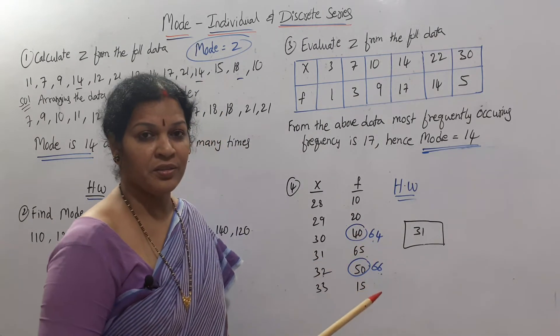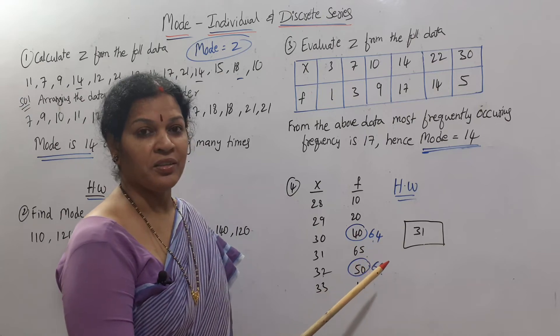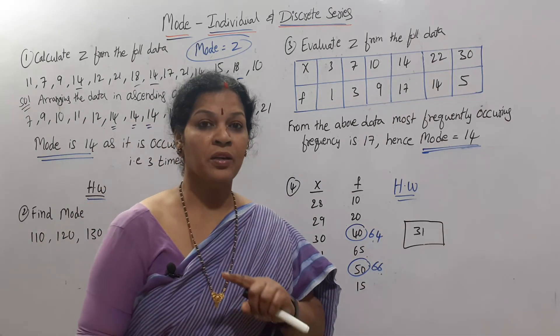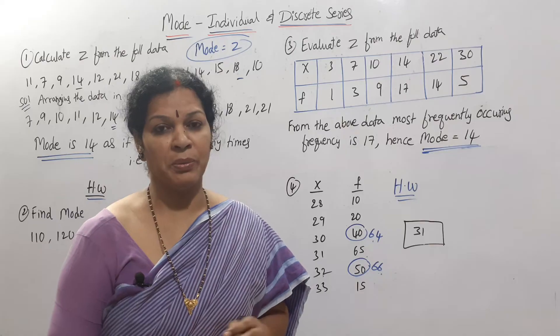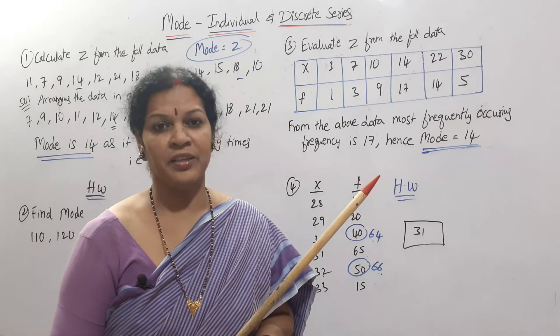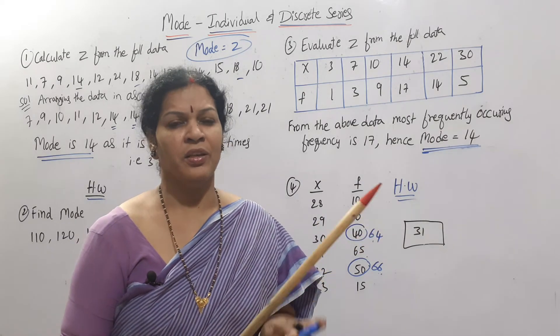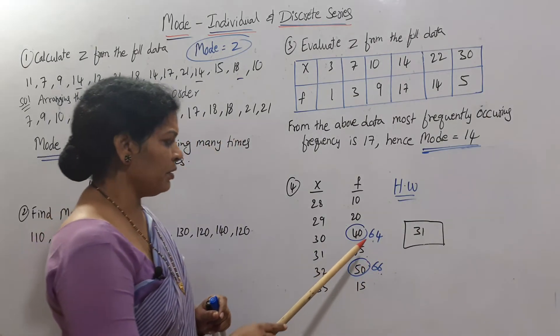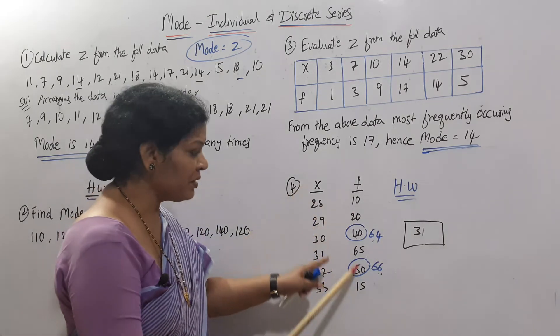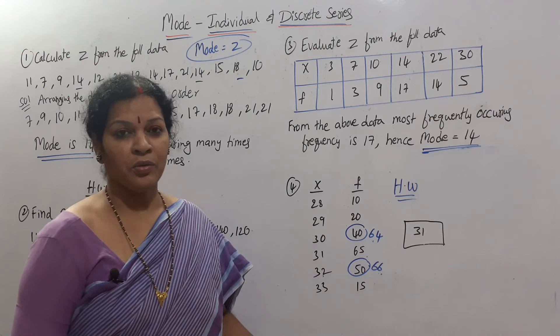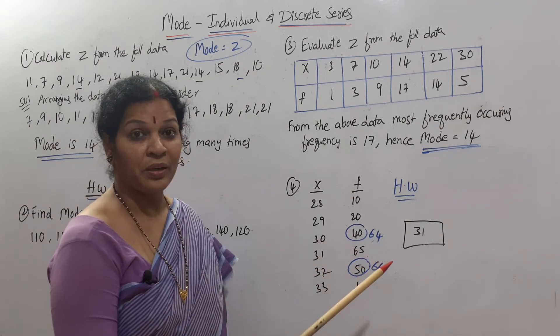You have to prepare a grouping table and analysis table. According to that, whatever item comes many times you will come to know through the grouping analysis table. Sometimes it can be 64 or 66 also as the mode. So when you find frequencies like this, don't go for mode by inspection. You have to prepare the grouping analysis table. That we will see in the next class.